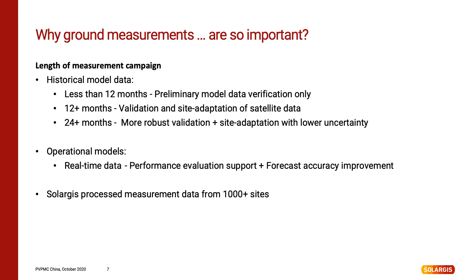High-accuracy ground measurements can be used to improve the accuracy of historical satellite time series data. This process is called site adaptation. In this case we need at least one year of measurements to catch all weather seasons on site. If you have two years of data, this is even better and will result in even higher accuracy. There is also an option to site adapt not just the historical time series, but also real-time performance evaluation data and even forecasts. Until now we have processed measurement data from more than 1000 sites provided by our customers or public meteo stations. So we are quite experienced in this process and I want to share some of our findings.